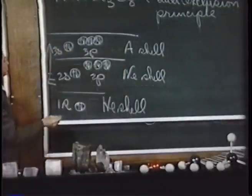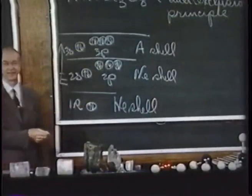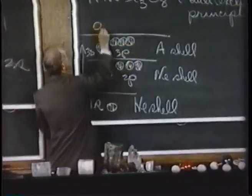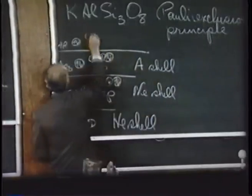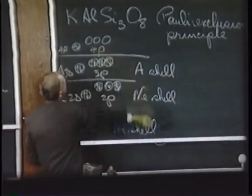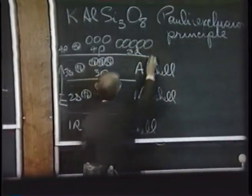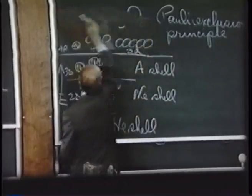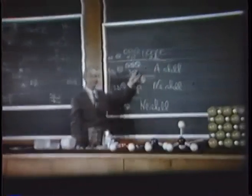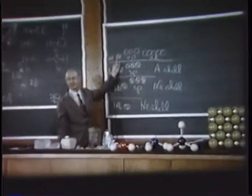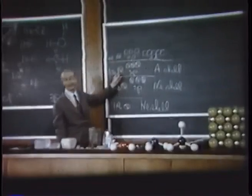Next we come to the fourth shell with atomic number 19, potassium. We have 2, 10, and 18 electrons — numbers characteristic of the first three noble gases. With potassium, we have the 4s electron; with calcium, a pair of 4s electrons. Then the 4p orbitals and the five 3d orbitals. This shell is called the krypton shell — a shell of 18 electrons occupying 9 orbitals.